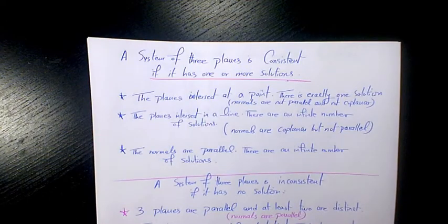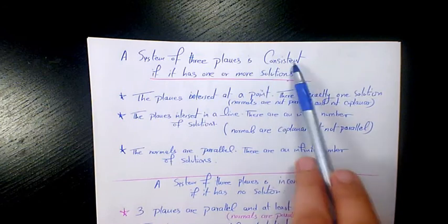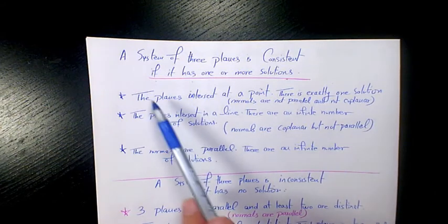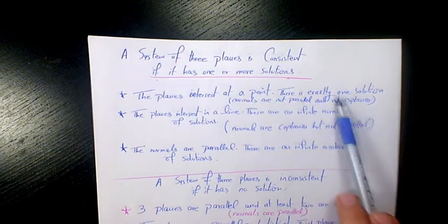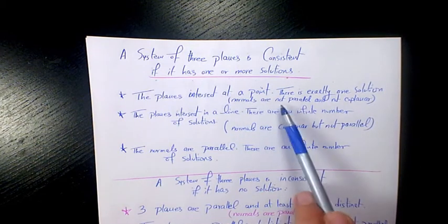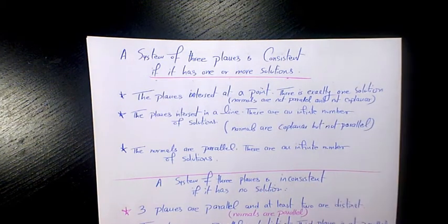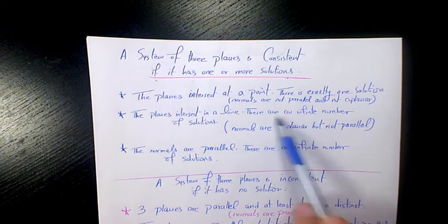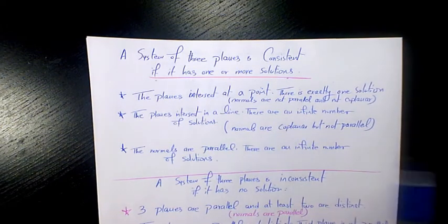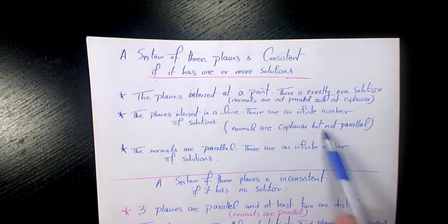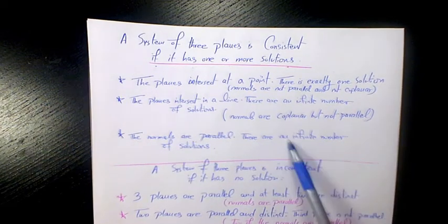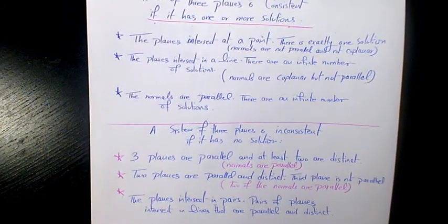Now let's check the intersection of three planes and what kinds of situations we get. A system of three planes is consistent if it has one or more solutions. There are three consistent cases: First, the planes intersect at one point — exactly one solution; normals are not parallel and not coplanar. Second, the planes intersect in a line — infinitely many solutions; normals are coplanar but not parallel. Third, all normals are parallel — infinitely many solutions, meaning coincidence.